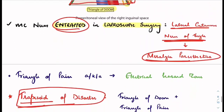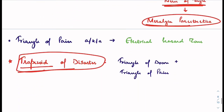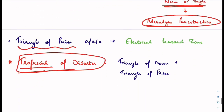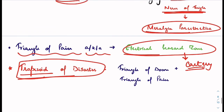The triangle of pain is also known as the electrical hazard zone because using cautery in this area can lead to disastrous events.